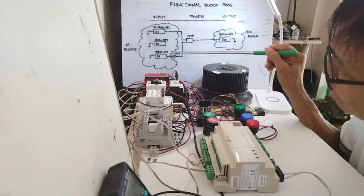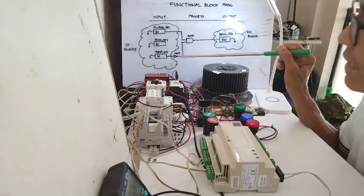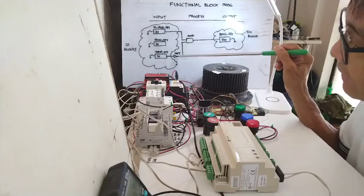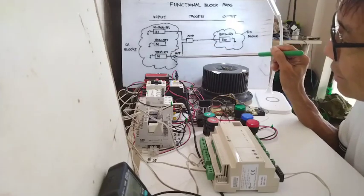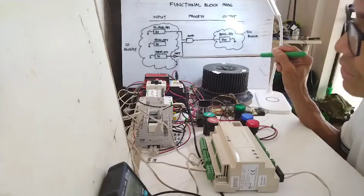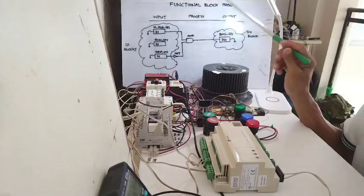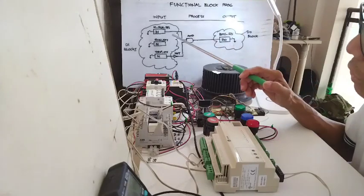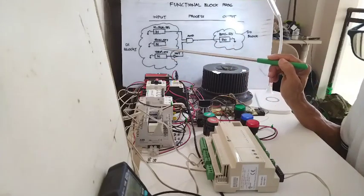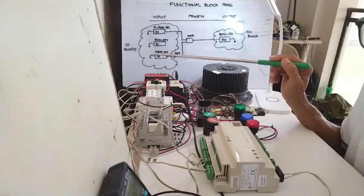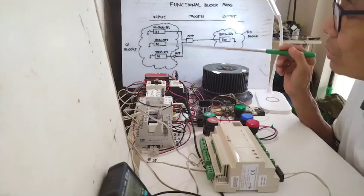I am using a NOT gate here, shown by a triangle with a dot in front of it. If the input is 1, it will be inverted to 0. If the input is 0, it will be inverted to 1. The condition to start the motor is: it must be in auto and there must be no problem with the motor. Obviously, you cannot start a motor when it is in a trip condition — it should not be in a trip condition before you can start it.